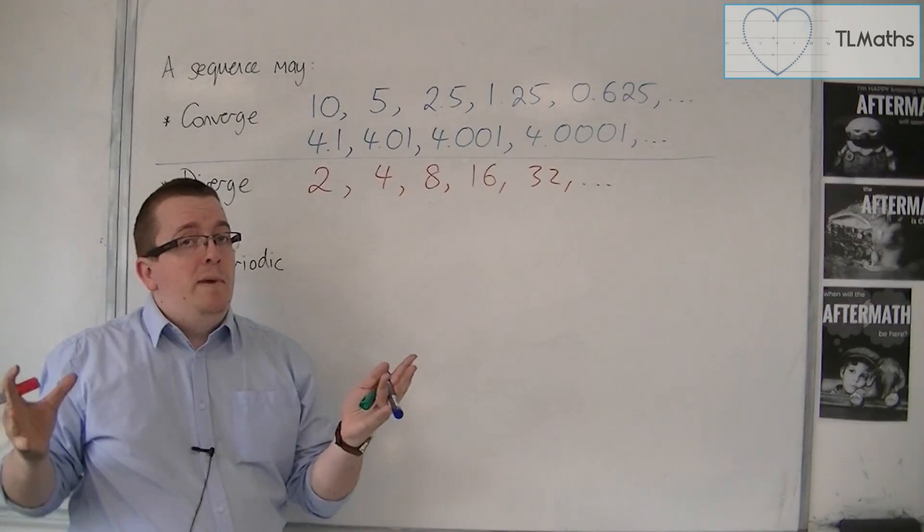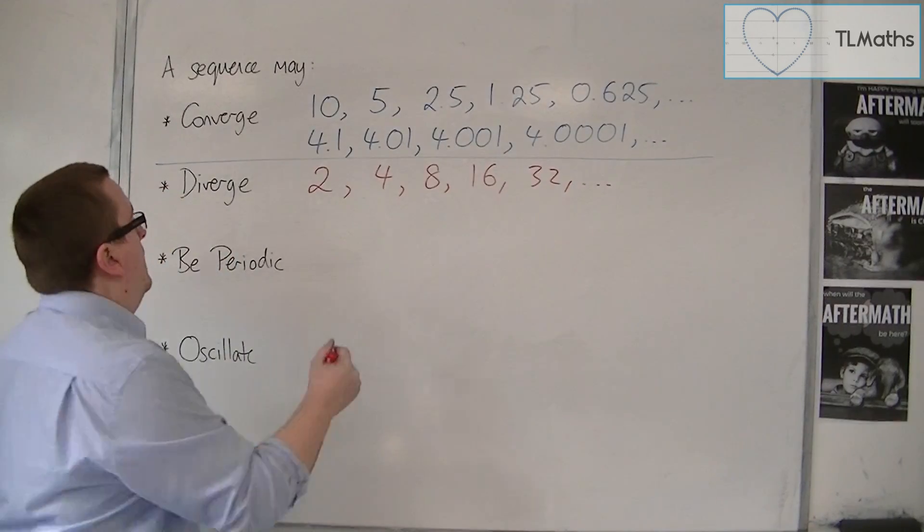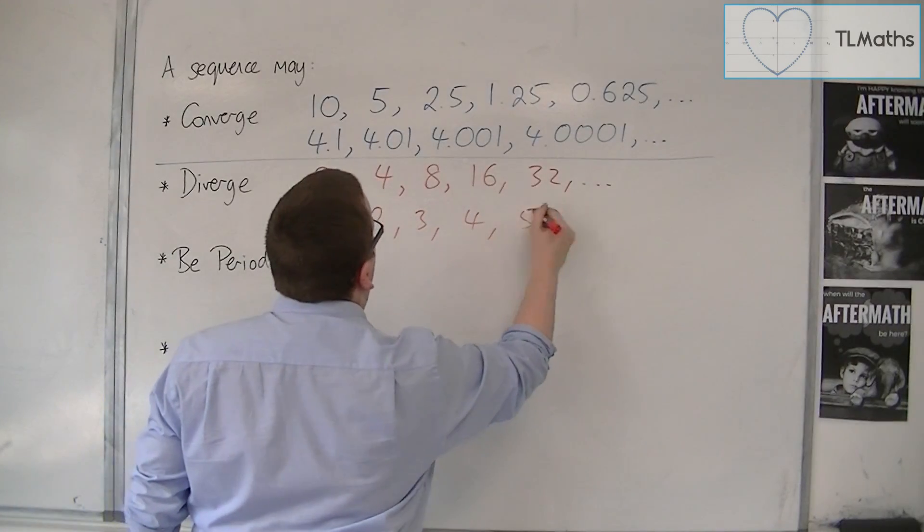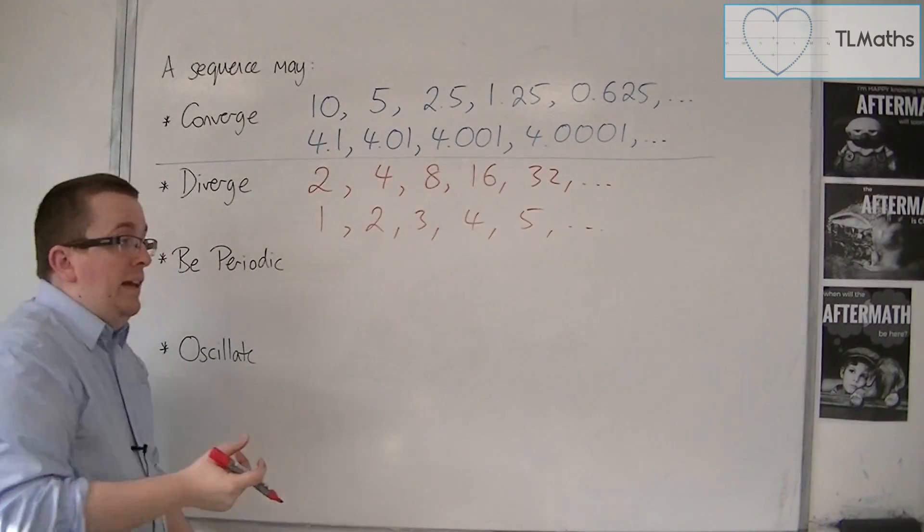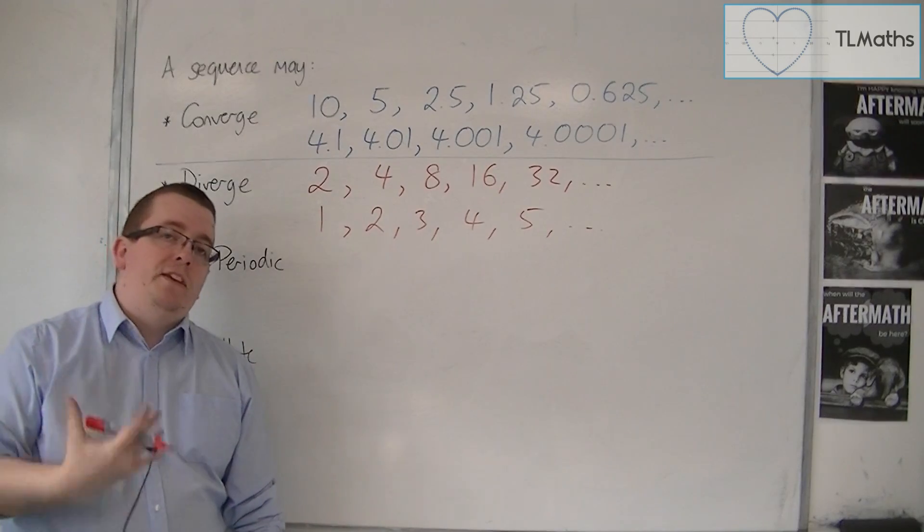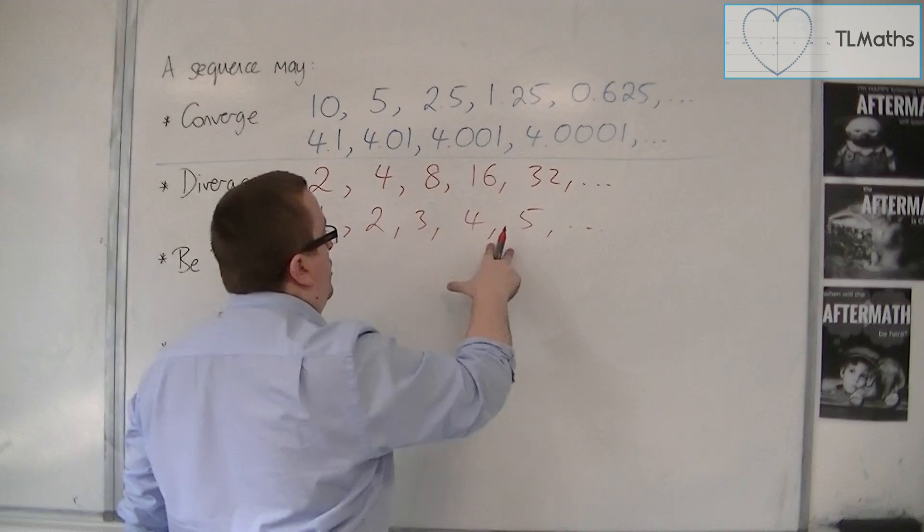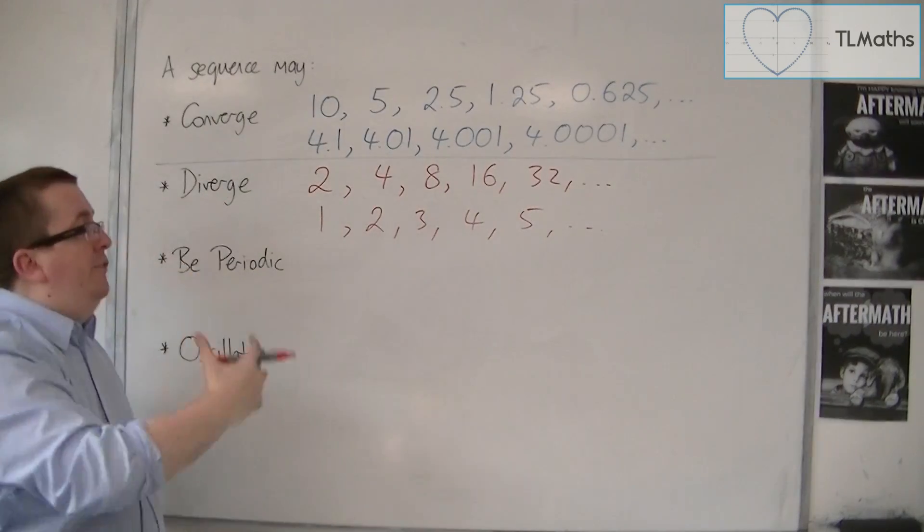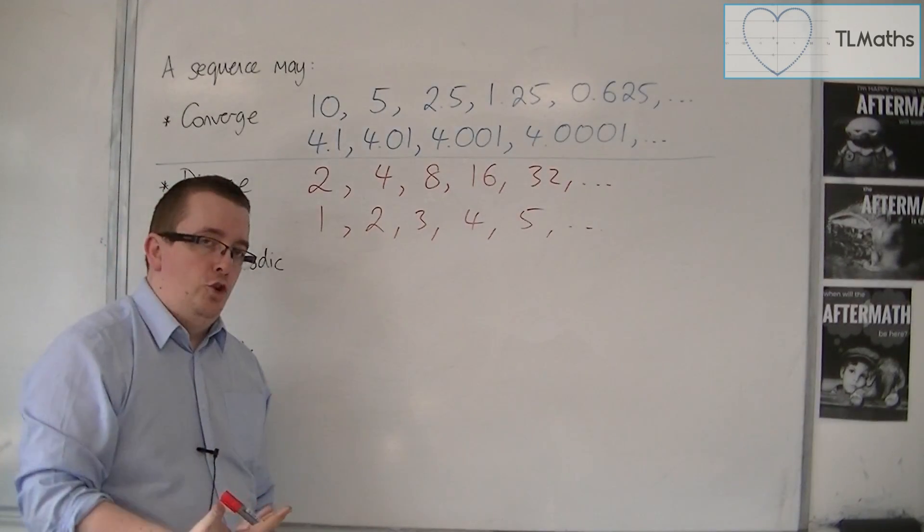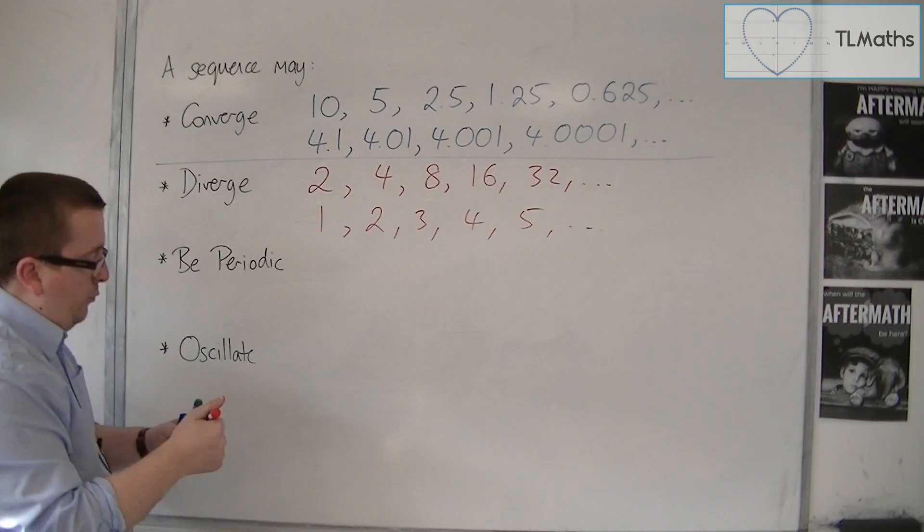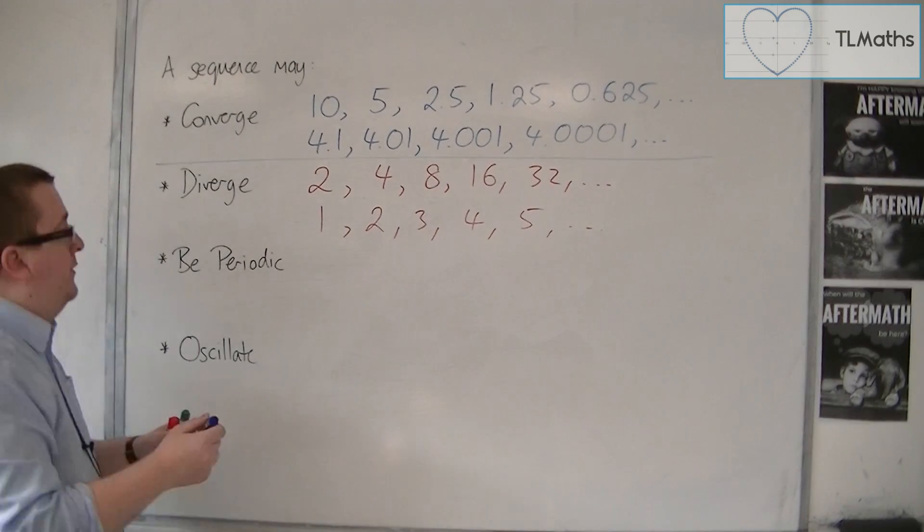That doesn't necessarily mean that the gap needs to get larger. If the sequence is 1, 2, 3, 4, 5, and so on, this is also a divergent sequence. I'm not adding on a larger amount each time. It's just that this is diverging because it is not converging. That is what we would mean by a divergent sequence.